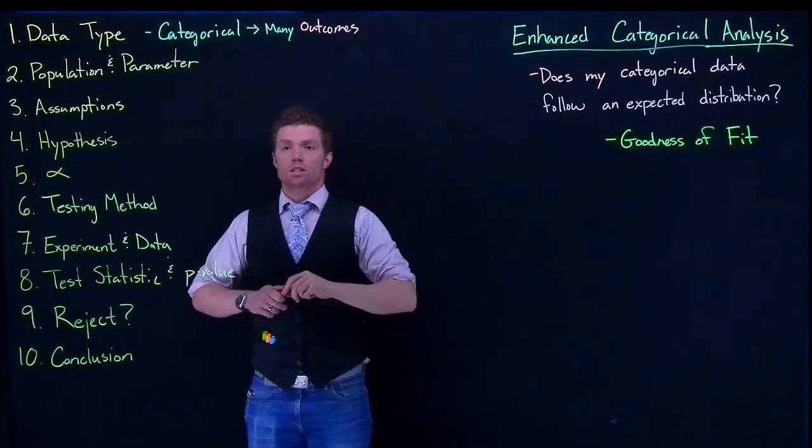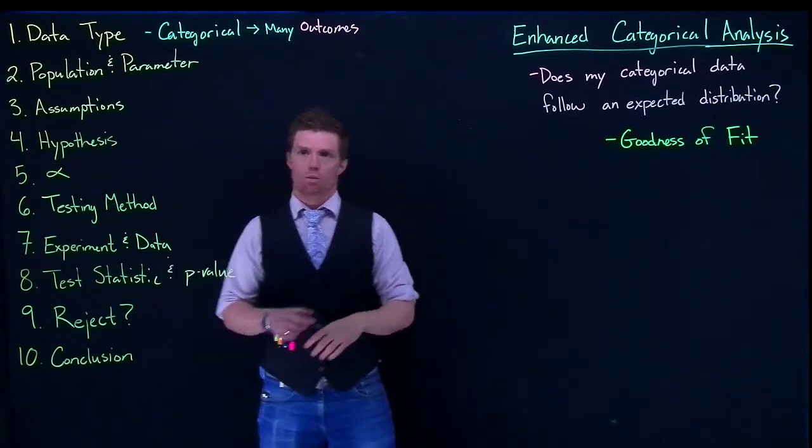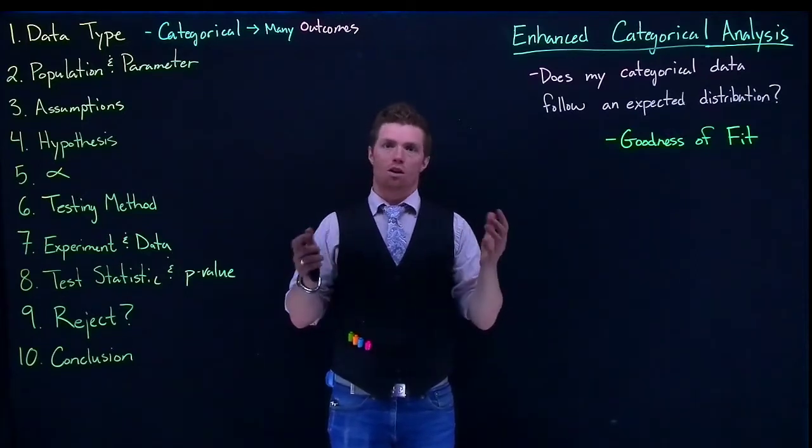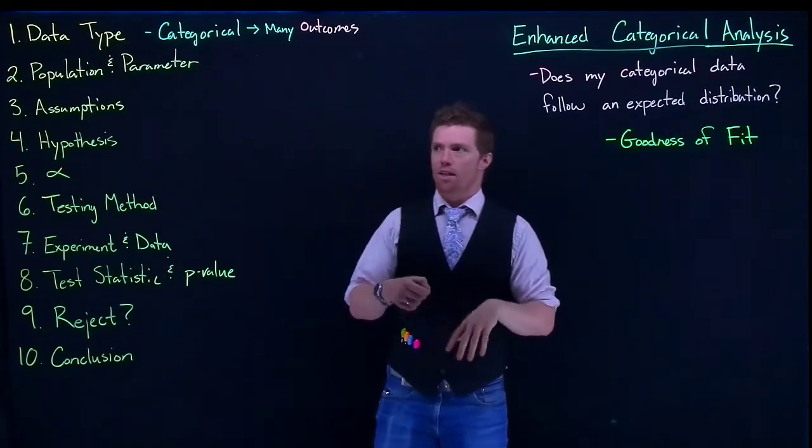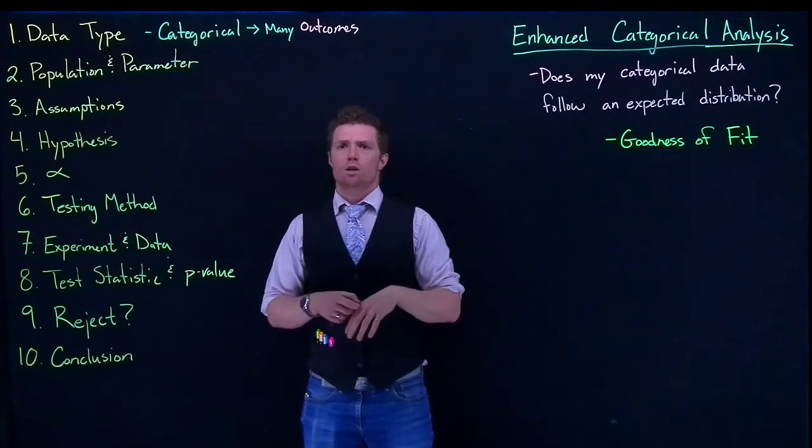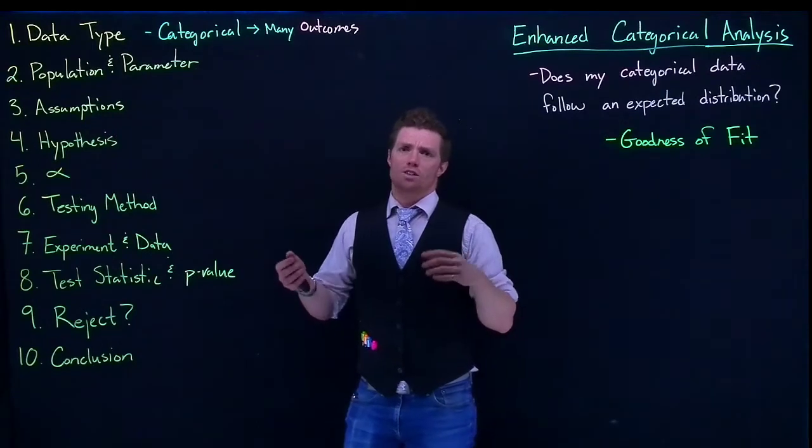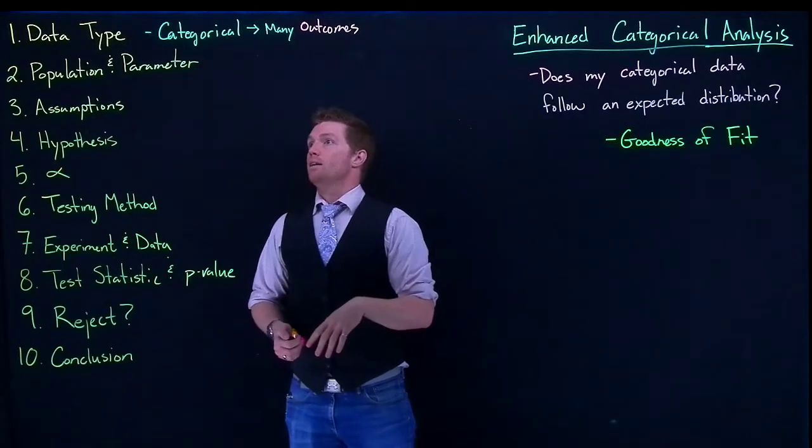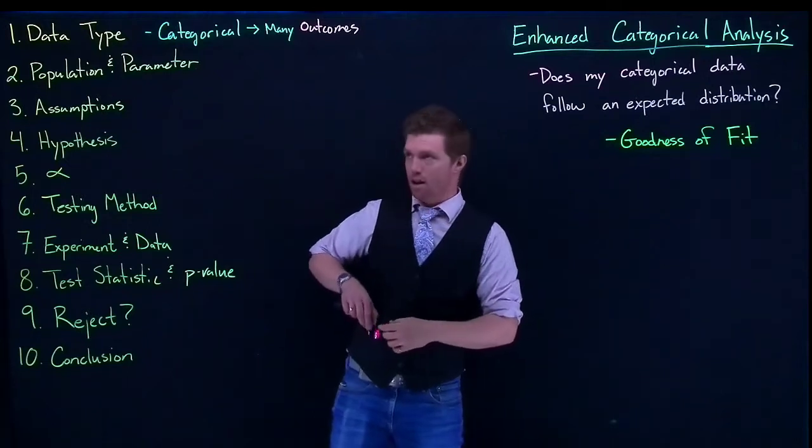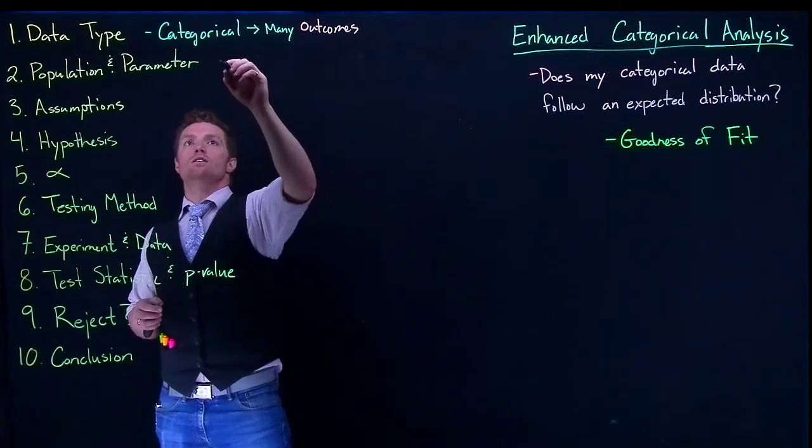Okay, so our population is still, we're going to be looking at, whatever group we're looking at, like all cars in a car lot, all ethnicities. So we're looking at the true distribution of ethnicities on a campus. And the parameter that we are looking at now is the distribution.